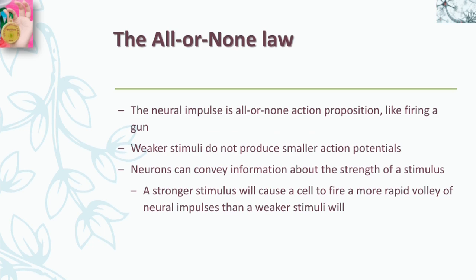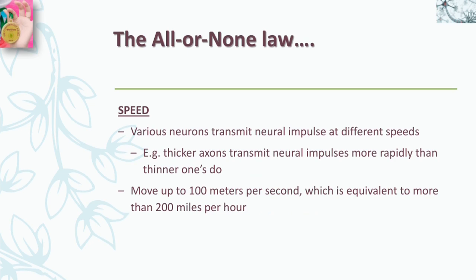In general, a stronger stimulus will cause a cell to fire a more rapid volley of neural impulses than a weaker stimulus will. Various neurons transmit neural impulses at different speeds — for example, thicker axons transmit neural impulses more rapidly than thinner ones do. Although neural impulses do not travel as fast as electricity along a wire, they are very fast, moving up to 100 meters per second, equivalent to more than 200 miles per hour. The entire complicated process of neural transmission takes only a few thousandths of a second, and in the time it takes you to read this description of the neural impulse, billions of such impulses have been transmitted in your nervous system.